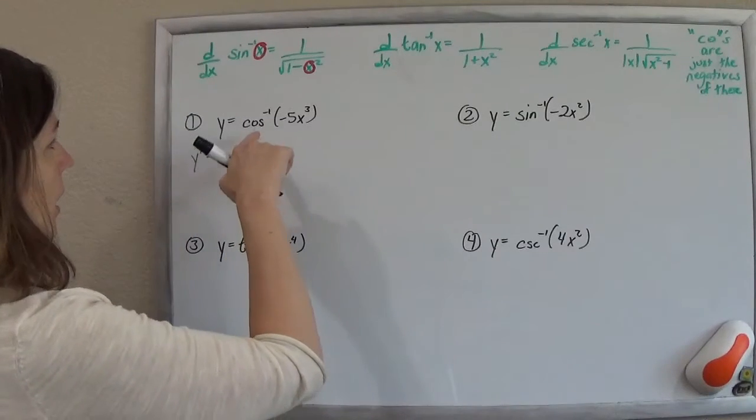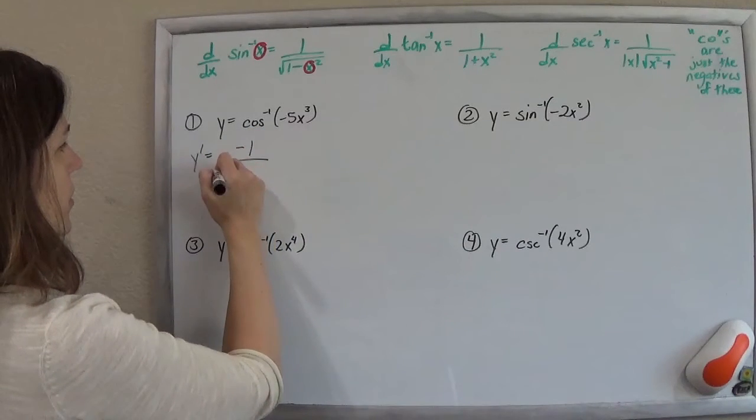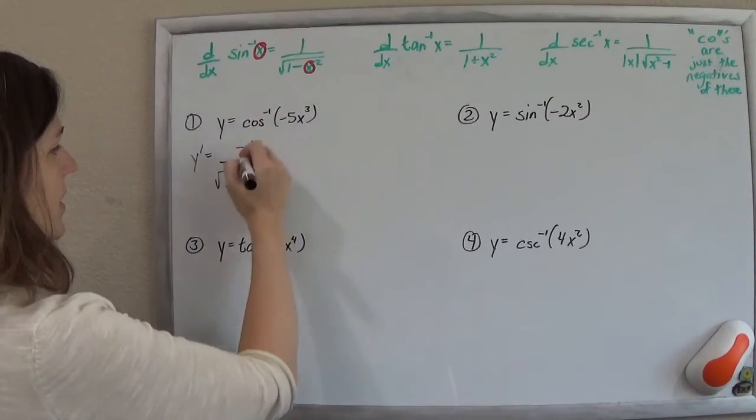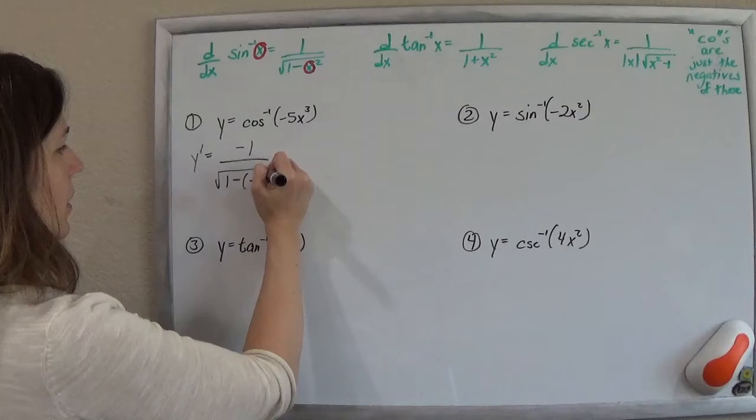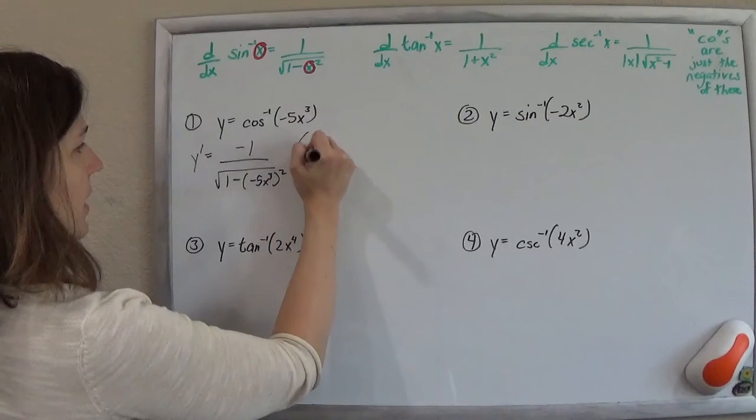Alright, so let's get to it. So this is going to be, following that template, negative 1 over the square root of 1 minus this whole chunky thing squared times the derivative of that inside.